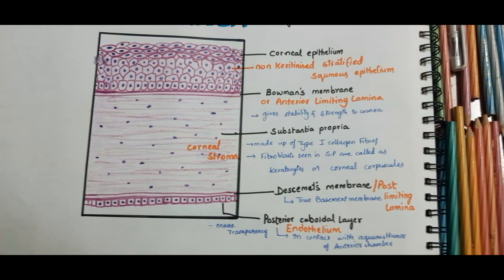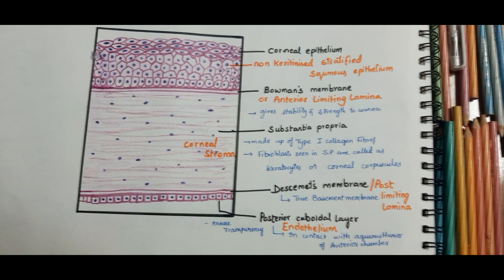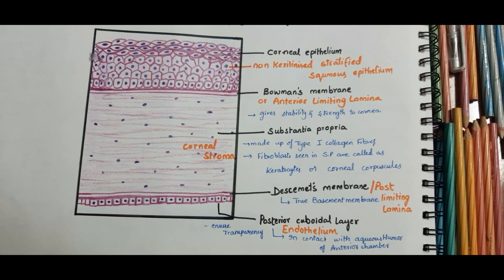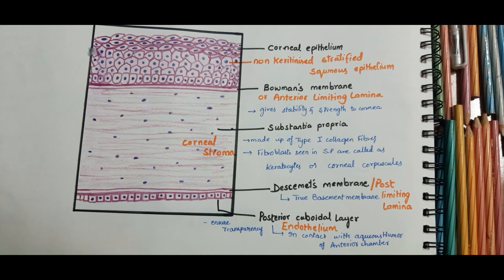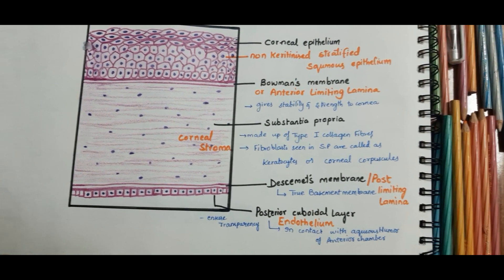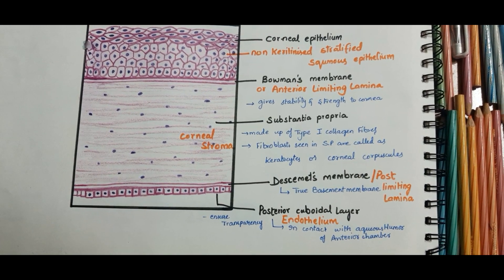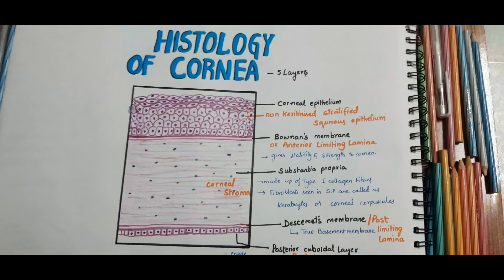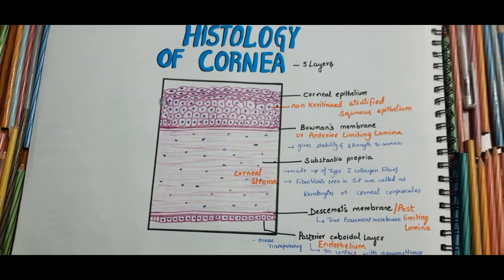To summarize: the first layer is the corneal epithelium — non-keratinized stratified squamous epithelium. The second layer is Bowman's membrane or the anterior limiting lamina. The third layer is the substantia propria or corneal stroma. The fourth layer is Desmet's membrane or the posterior limiting lamina. The fifth layer is the posterior cuboidal layer or endothelium. That is a brief overview of corneal histology. If you like this video, please subscribe to my channel and suggest topics for future videos.